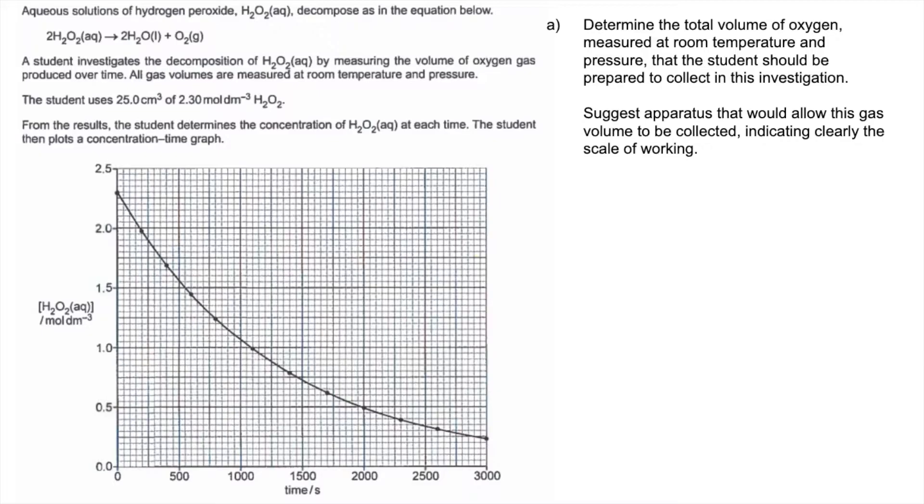So part A, you've got to calculate the volume of oxygen measured at RTP the student should collect. The way we're going to do that is get the moles of hydrogen peroxide. That's concentration times volume. Remember the volume's got to be in dm³. Use the mole ratio in the equation to get the volume of oxygen, so it's half the moles of hydrogen peroxide. Then to turn that into a volume at RTP multiply by 24. So that's how many dm³ of oxygen should be produced.